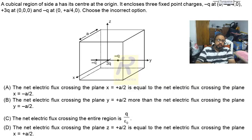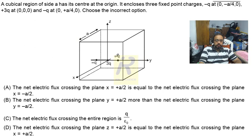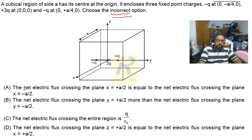In this question we have a cube, and in this region of the cube there are three charges inside: -q, -q, and +3q. Their coordinates are given in the question itself, and the length of a side of the cube is 'a'. We have to choose the incorrect option.